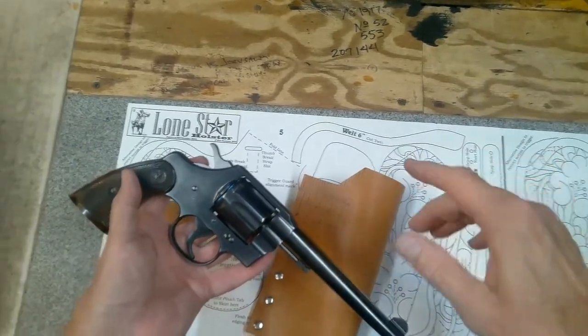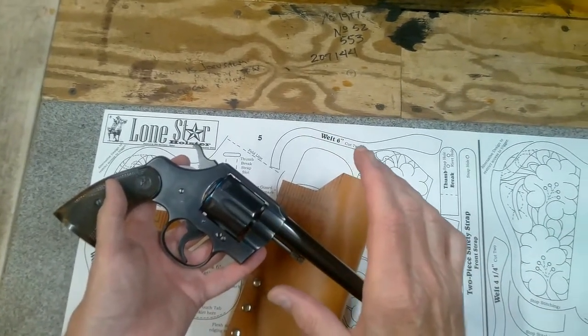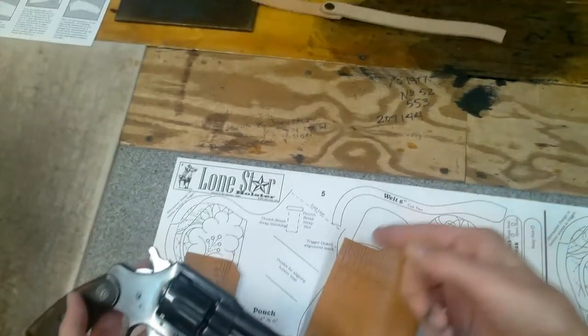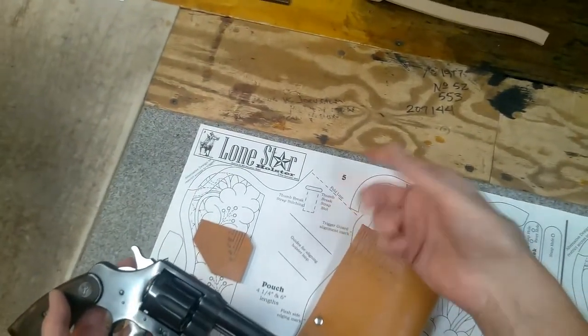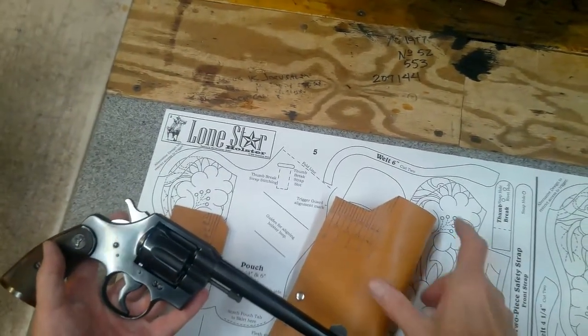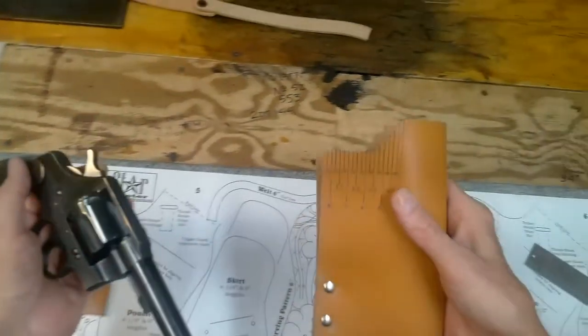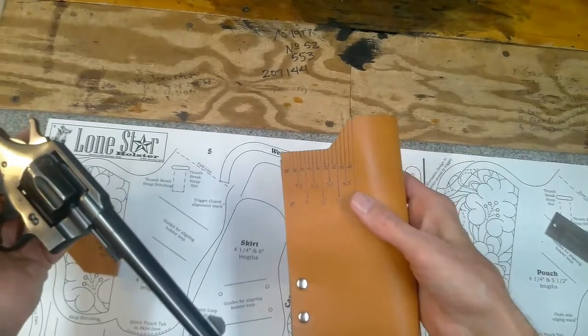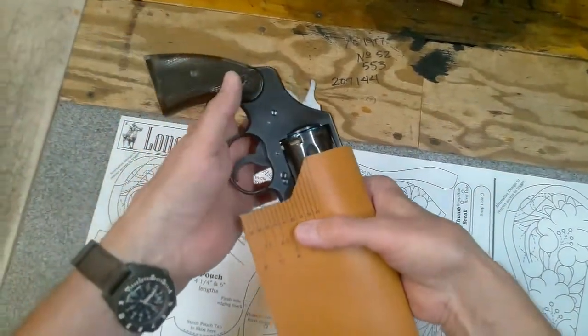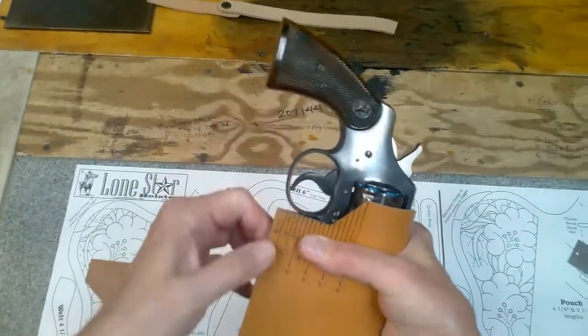Each holster pattern is designed to fit multiple weapons. As such, different weapons may need a different thickness of welt to achieve a friction fit against the weapon's frame. Variations in the weight of the leather will also make a difference in the thickness of the welt. To get the correct fit, thicknesses can be added or subtracted to the welt. So taking measurements with the holster and welt gauges at different times during construction is required.